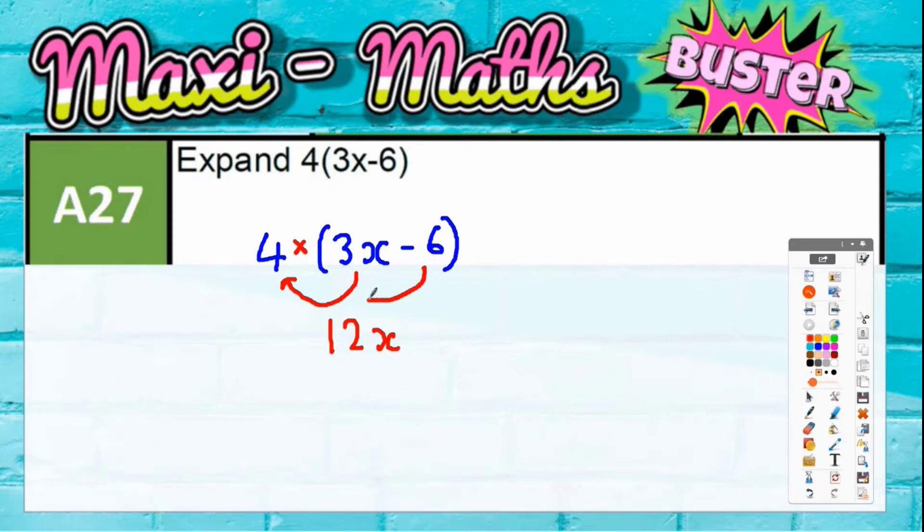Then we want negative 6 happening four times. So 6 times 4 is 24, therefore negative 6 times 4 must be negative 24. That's as simple as that, so your final answer is 12x minus 24.